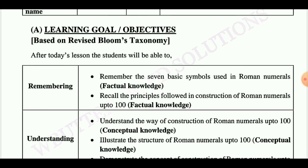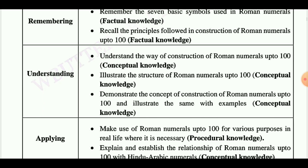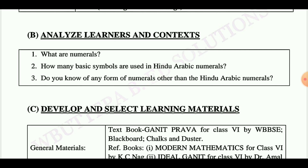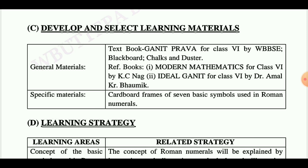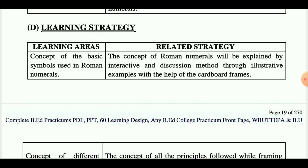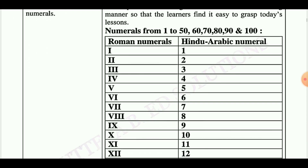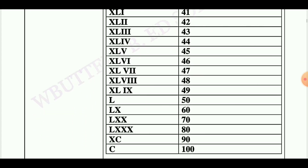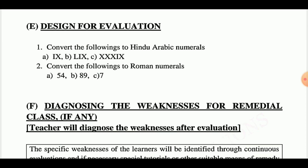Learning goals or objectives are: remembering, understanding, applying, analyzing, evaluating, creating. Next, analyze learner and context from previous knowledge — we have questions one, two, three. Next point is develop and select learning materials, therefore learning strategy, which is divided into two parts: learning areas and related strategies.